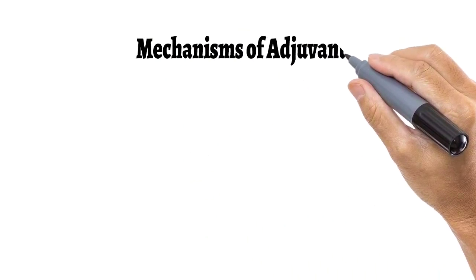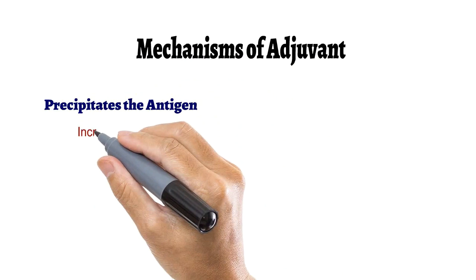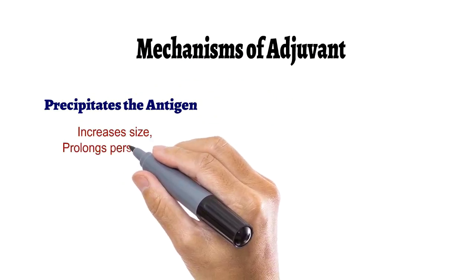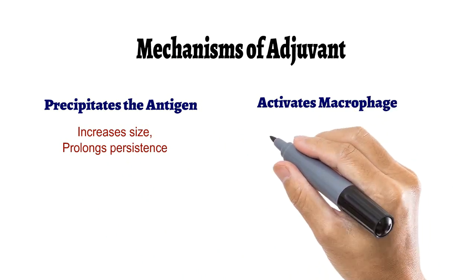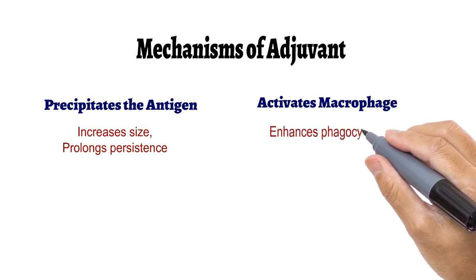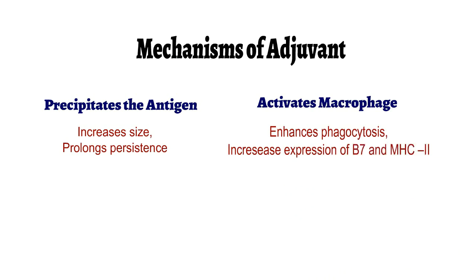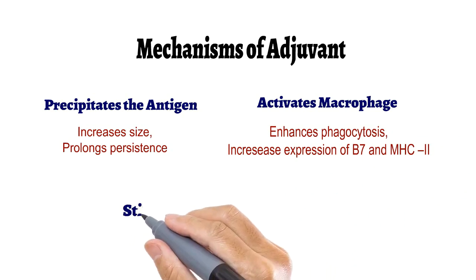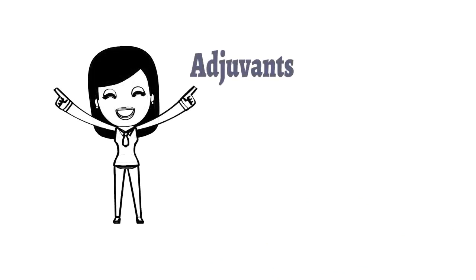In short, adjuvants either precipitate the antigen, increase its size, and prolong its persistence; or they activate macrophages and enhance phagocytosis and increase the expression of MHC class II and B7 molecules, which provide the co-stimulatory signal; or some adjuvants stimulate the local inflammation process.